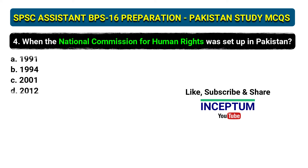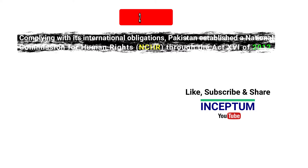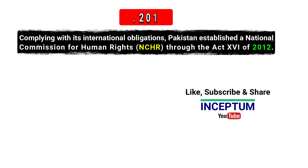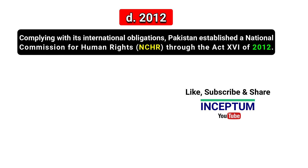Question 4: When was the National Commission for Human Rights set up in Pakistan? Options: 1991, 1994, 2001, 2012. Complying with its international obligations, Pakistan established the National Commission for Human Rights through Act 16 of 2012.